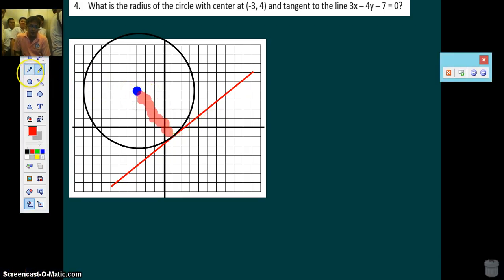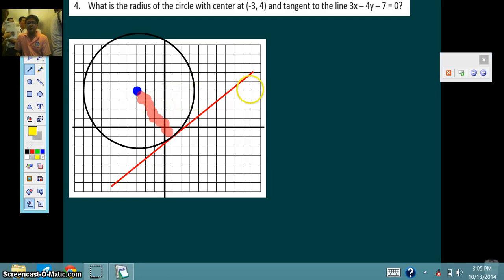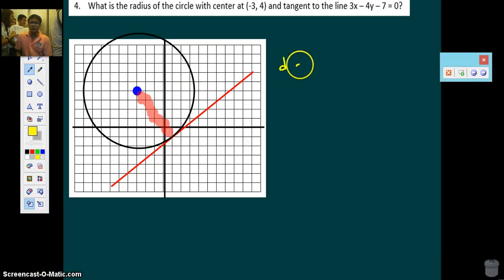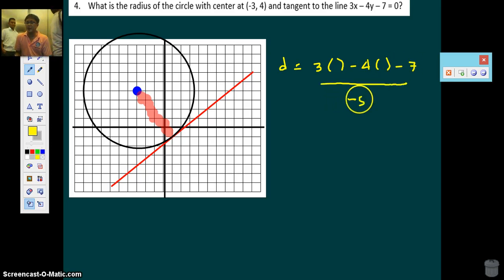The radius must be this length. And it's simply the distance between the line and the point. So setting up the formula for the distance between the line and the point: 3 times negative 3, minus 4 times 4, minus 7, all over square root of 3 squared plus negative 4 squared. But following the conventions, you can choose the sign to be the same sign of B. But we're only after the magnitude of the radius so just be sure, absolute value.